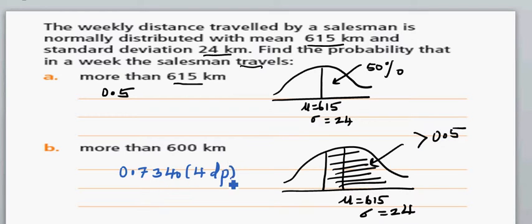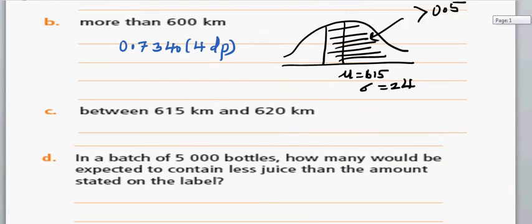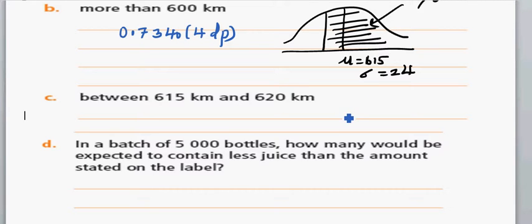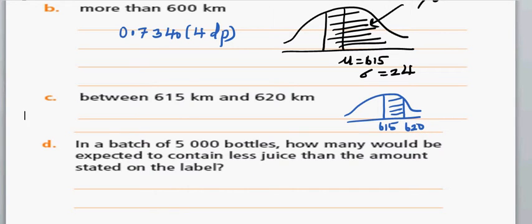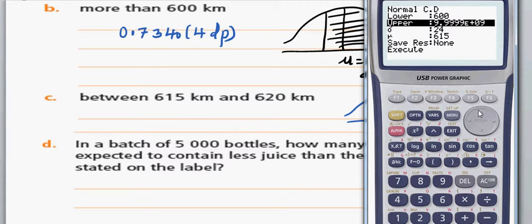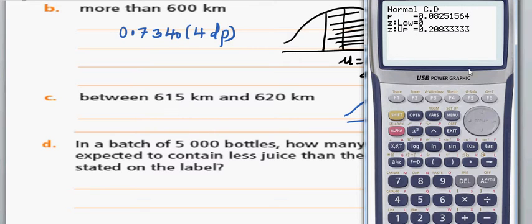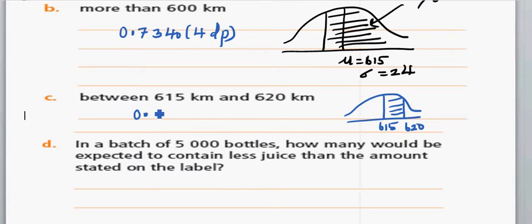Generally you should write the answer in 4 decimal places. The next question is the probability of traveling between 615 and 620. On the normal curve, 615 is exactly in the middle and 620 comes slightly to the right. Using the calculator, set lower to 615 and upper to 620, with the same mean and standard deviation. The probability is 0.0825 to 4 decimal places.